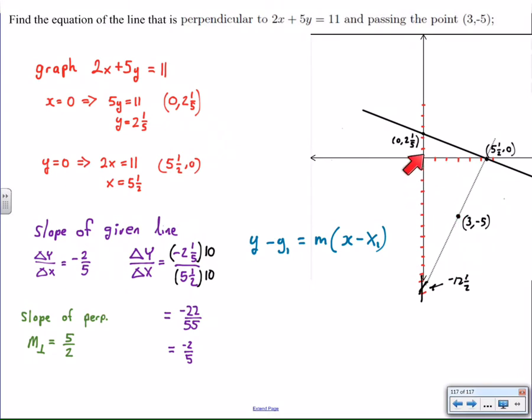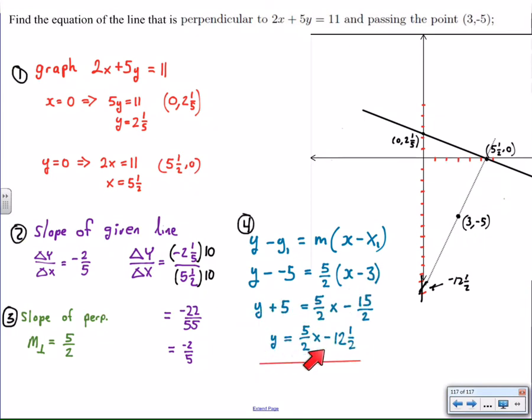So I'm going to go y + 5 = 5/2, that's my slope, times (x - 3). And the rest is just cosmetics and I find the equation of the line perpendicular to the given line through the point (3, -5) should be this one right here.